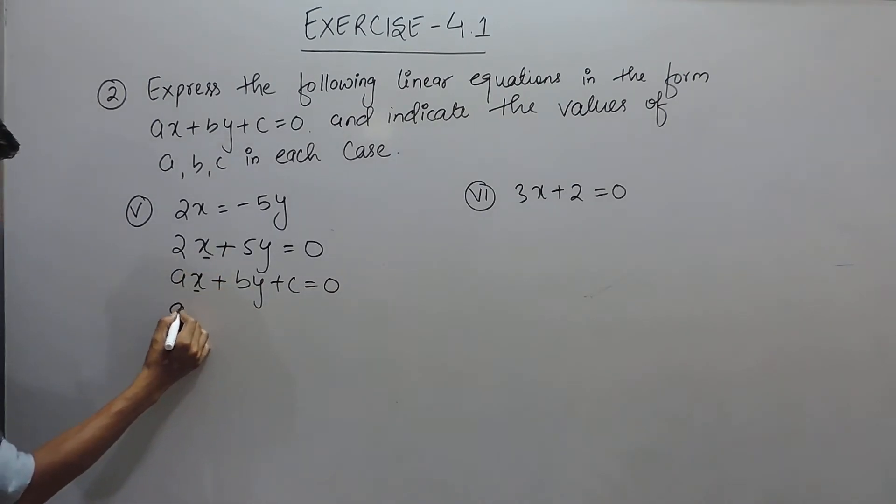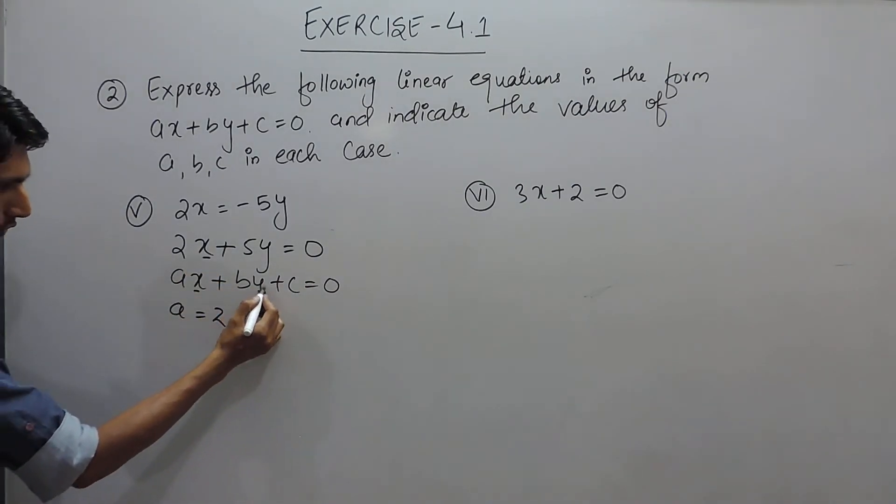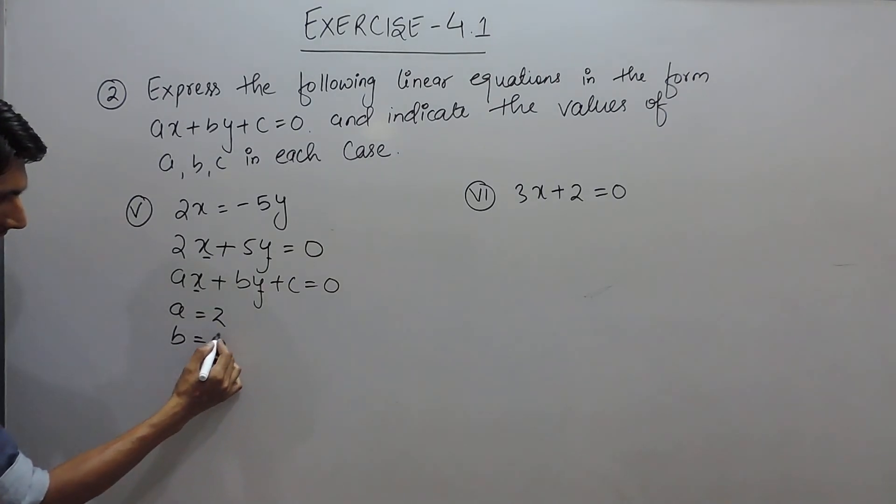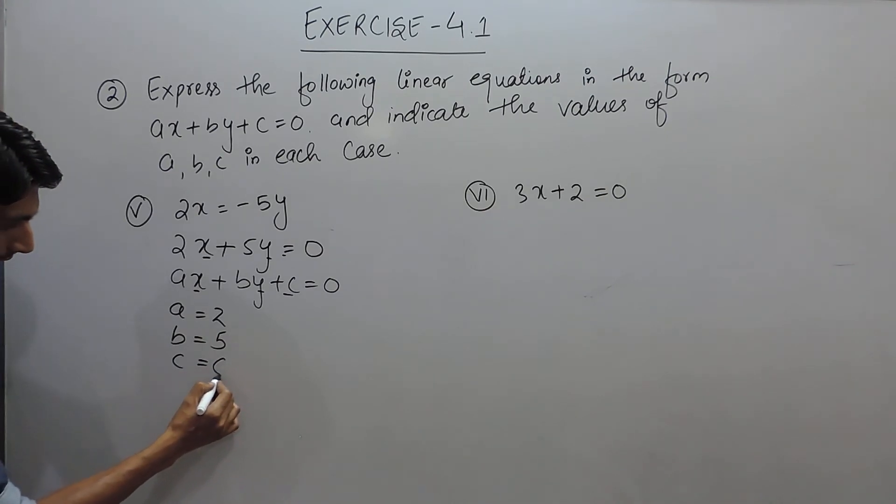So the coefficient of x, a is equal to 2, coefficient of y, b is equal to 5, and because there is no coefficient or any constant term, so the value of c must be equal to 0.